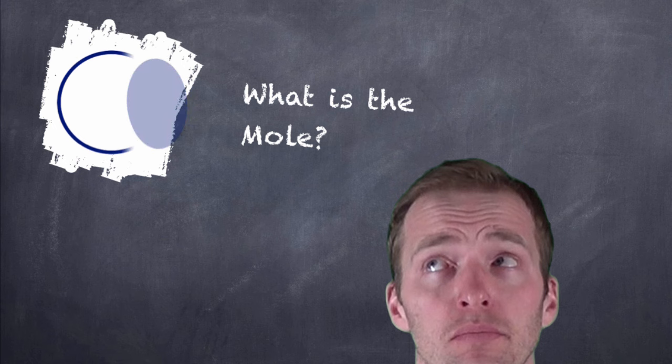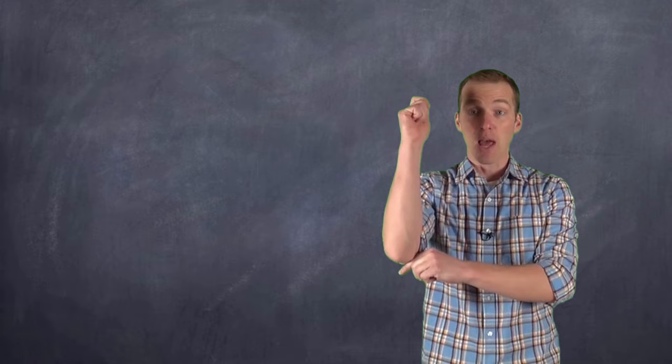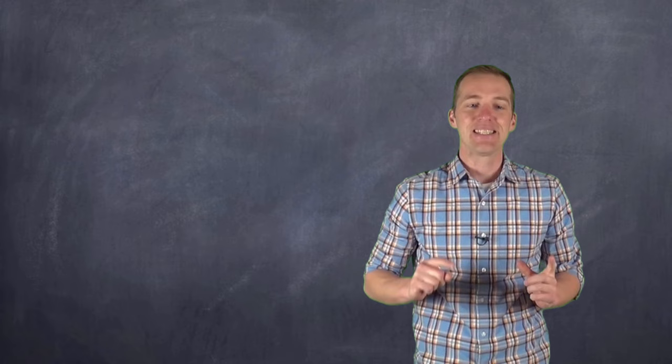When you think of a mole, you might think of the animal, or maybe a skin mole, or if you're into Mexican food, maybe that mole. But when chemists think about the mole, we think about a number, and that number is 6.02 times 10 to the 23. Yeah, that's a really big number.